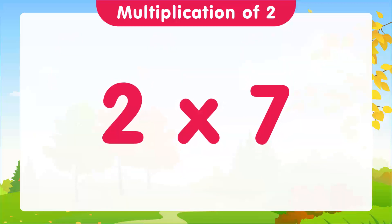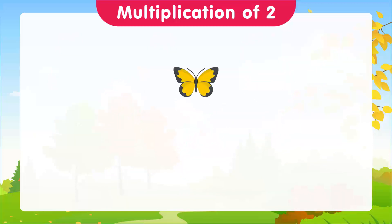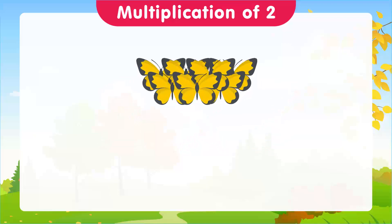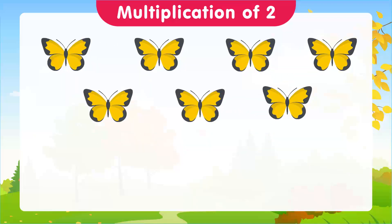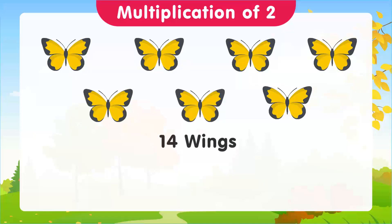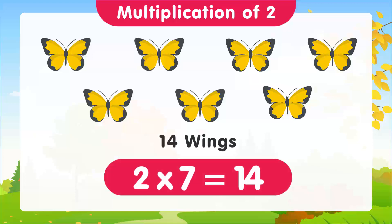For 2 times 7, we're going to use butterflies. Imagine we have 7 butterflies. How many wings do they have between them? 14 wings. And that's our seventh multiplication: 2 times 7 is equal to 14.